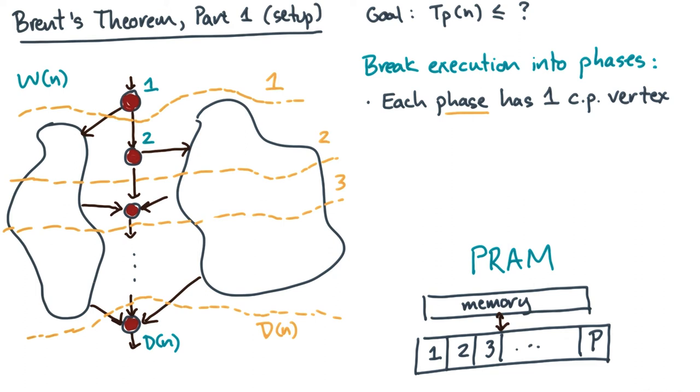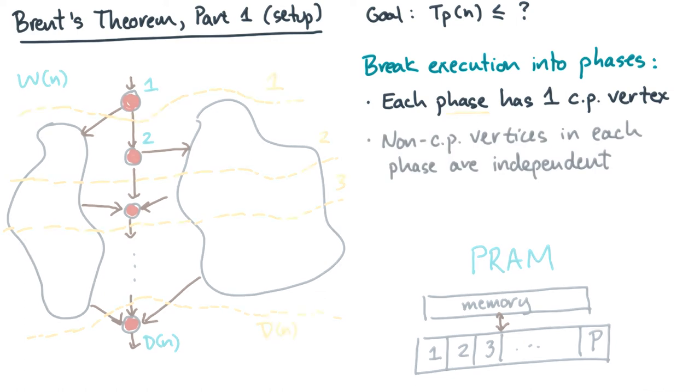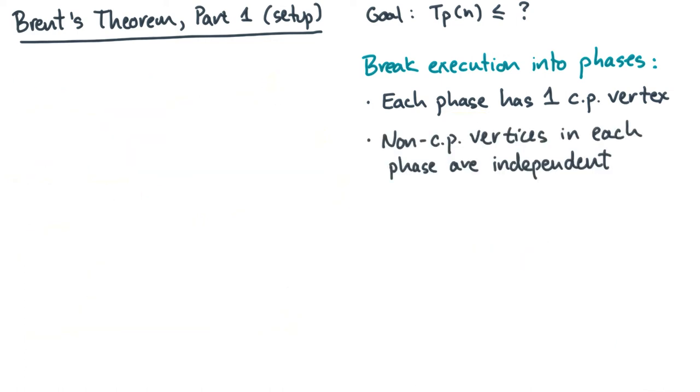The second condition is that all non-critical path vertices within a phase are independent. Let me show you what I mean. Let's take any phase with its single critical path vertex, like this one.